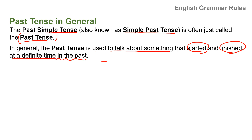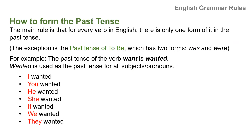For example, I had breakfast at 7 a.m. — so this is past tense, it started and it finished. How to form the past tense? The main rule is that for every verb in English, there is only one form of it in the past tense.